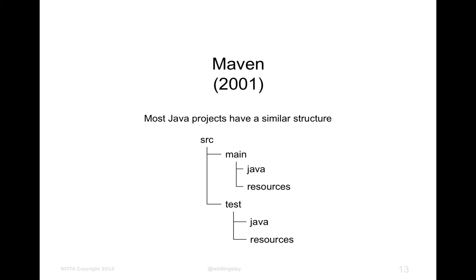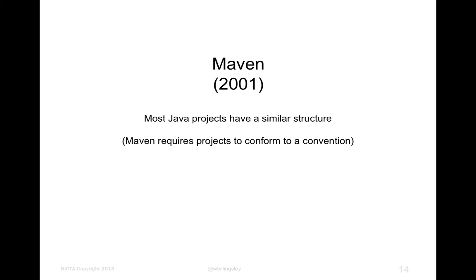Maven goes with the idea that if most people end up wanting a pretty similar structure for their project, why not require projects to conform to a particular convention? If the project looks like that, you don't need to define all the targets, because Maven pre-defines a certain number of build phases: compiling, compiling the tests, and running the tests — all as dependent targets without being explicitly defined in the build file.